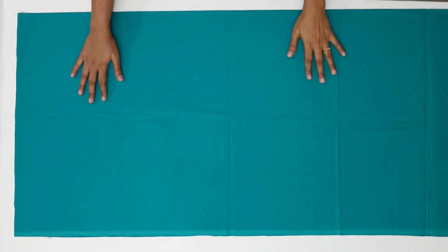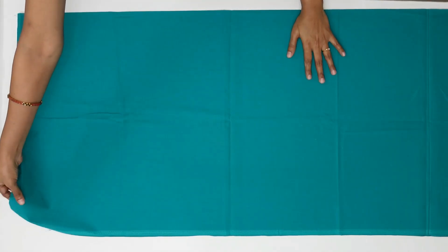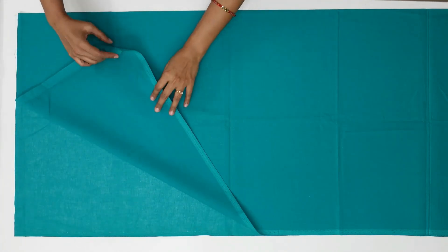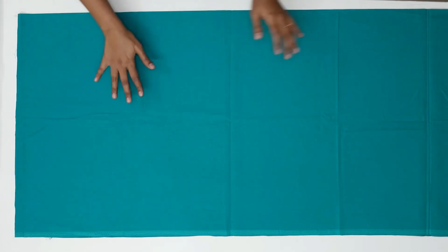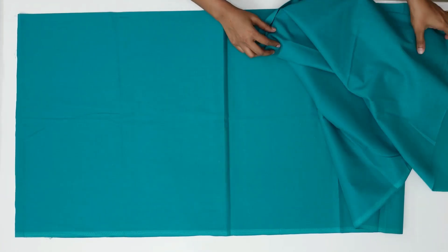Here I have taken two meters of fabric. Now I fold it here, placing selvedge together. Then again fold it into two.